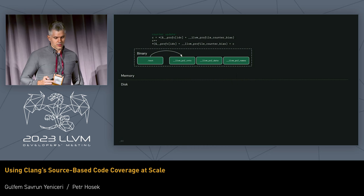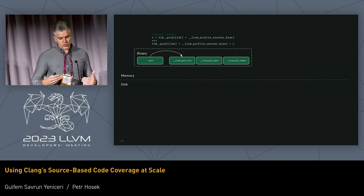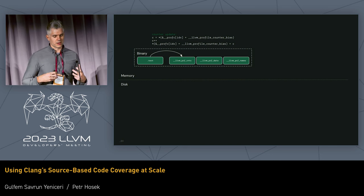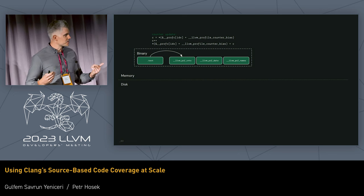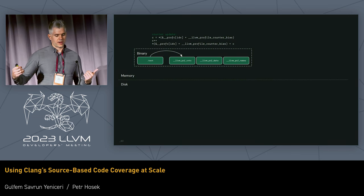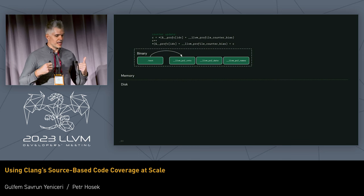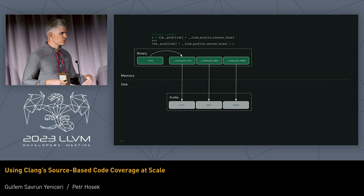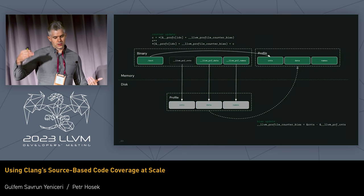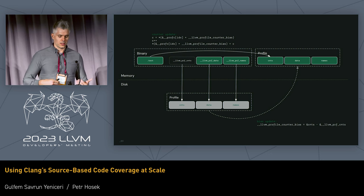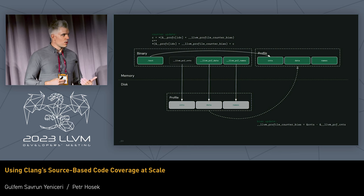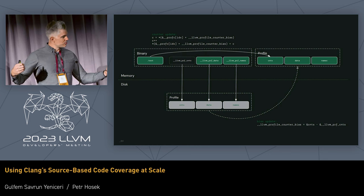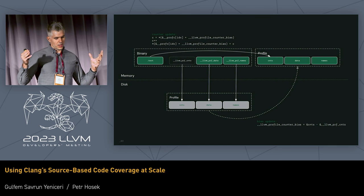The way we've addressed this is through a level of indirection. We've introduced a new special variable called the LLVM profile counter bias, which is an offset or displacement that allows you to relocate the location of counters. Initially it's zero, so the program behaves just as before. At startup, we write all profiles to disk, then mmap those profiles back into memory and update the counter bias to the delta between the original location and the new location. From that point on, every counter update is applied to the mmap'd version of the profile for the whole duration of the program — so if the program terminates abnormally, we still get accurate counters.